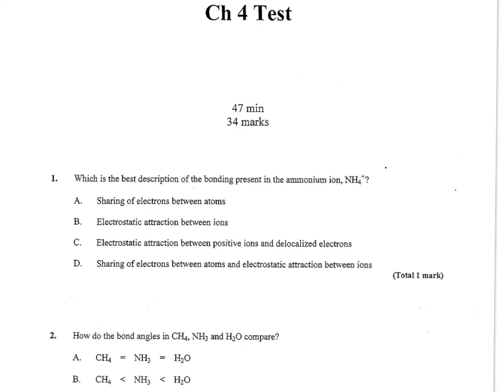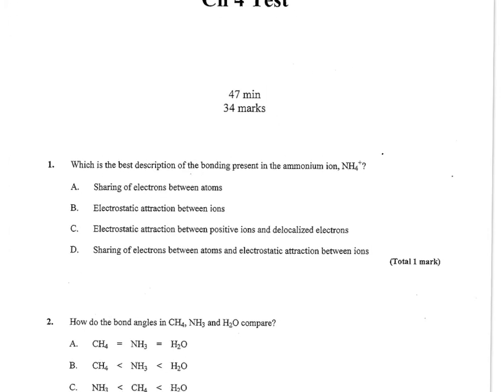Question 1 wants to know the best description of the bonding present in the ammonium ion. You should realize that ammonium bonds covalently - the nitrogen bonds covalently to all four hydrogen with an electron left to donate, making it a plus one polyatomic ion. That means it shares electrons between the four hydrogen and the one nitrogen. So A is going to be my best choice.